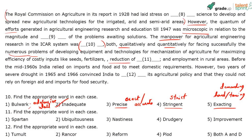For the eleventh blank: 'reduction of [blank] and employment in rural areas.' The clue is 'reduction of something' — it must be negative, otherwise why would you want to reduce it? Options are: Spartan, ubiquitousness, nastiness, drudgery, improvement. Spartan can mean very frugal or simple — not right. Ubiquitous means omnipresent — 'reduction of omnipresence' doesn't make sense.